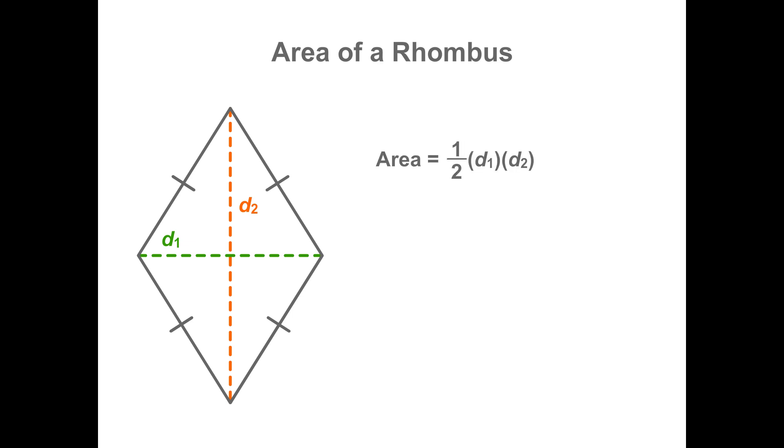In other words, the area equals one half times D1 times D2. Let's look at why this is true. The diagonals of a rhombus are perpendicular and they bisect each other. So four congruent right triangles are formed by the diagonals. Watch how the area of one triangle is used to calculate this area formula for a rhombus.